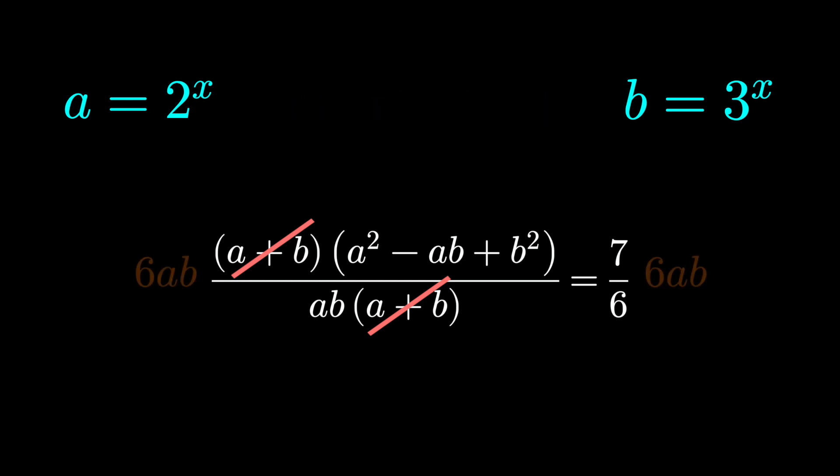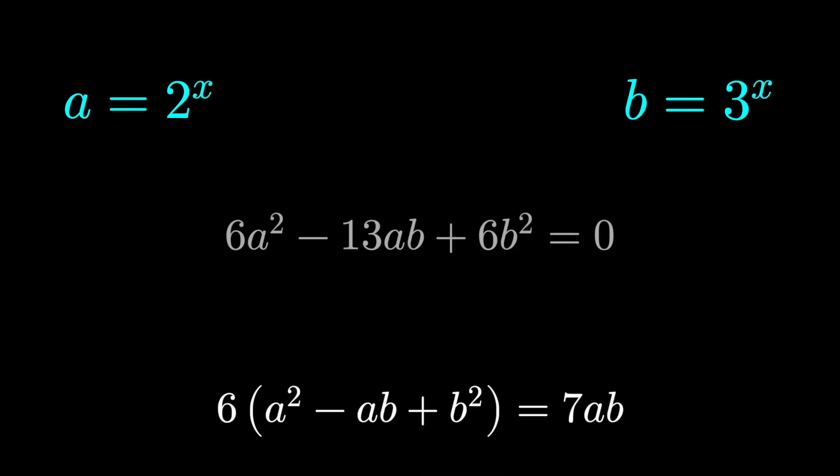Multiply both sides by 6 and by ab we have this expression. Set this equal to 0 by moving everything to the left and distributing. We get a very interesting situation here.